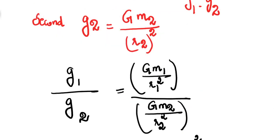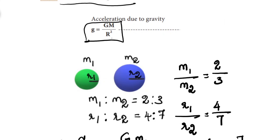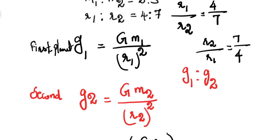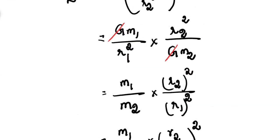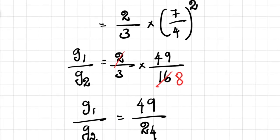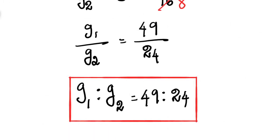Once again, we will repeat the steps. Given: mass ratio M1 is to M2 equals 2 is to 3, and radius ratio R1 is to R2 equals 4 is to 7. The formula for acceleration due to gravity is g equal to G times mass of the planet divided by radius of the planet whole square. Applying for G1 and G2 gives the result.